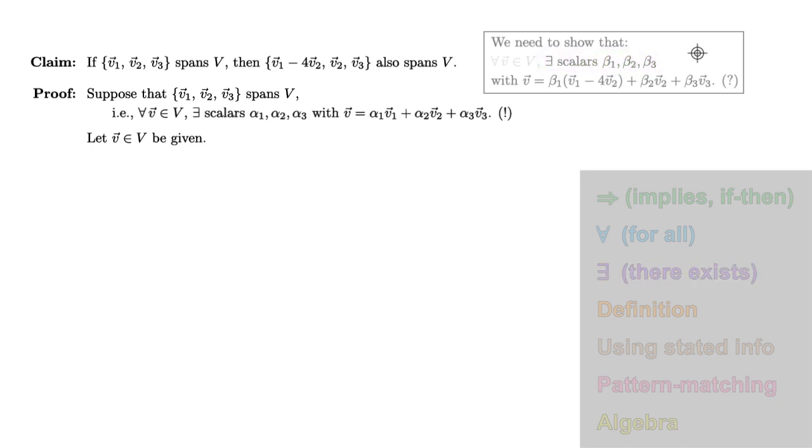In order to do that, we're going to need something to start from. Fortunately, we now have a vector v in V in our proof. We can put this token into the for all slot in our hypothesis to unlock the rest of the hypothesis. It tells us that there exist scalars alpha1, alpha2, alpha3, with v equal to alpha1 v1 plus alpha2 v2 plus alpha3 v3.